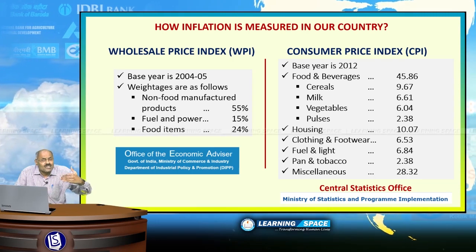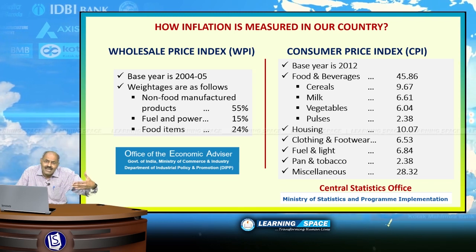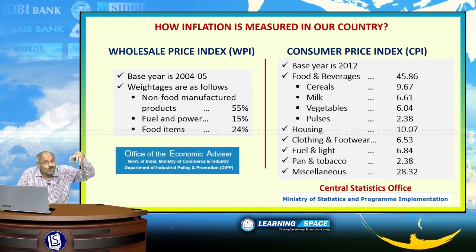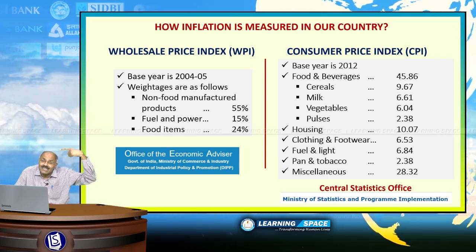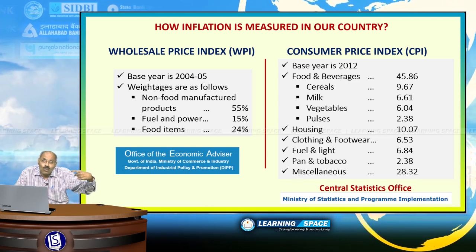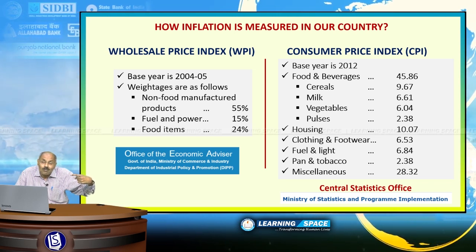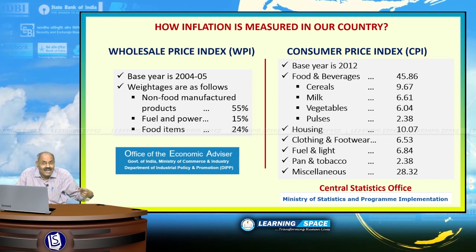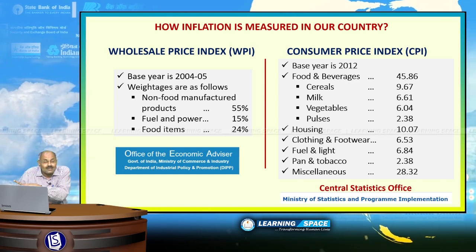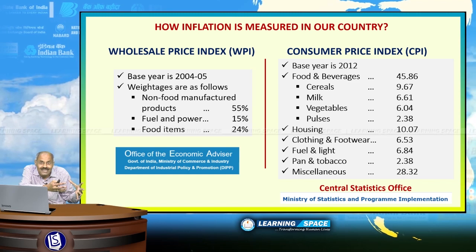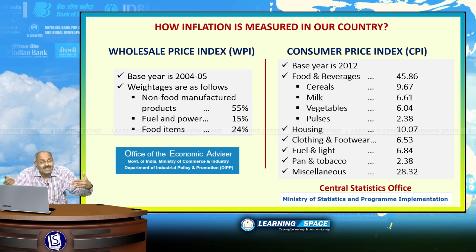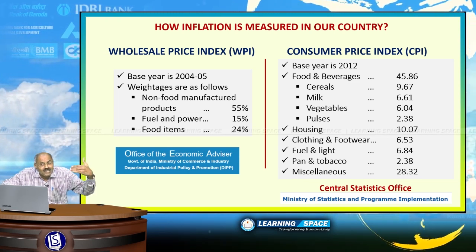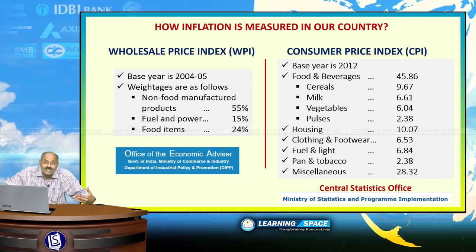Inflation is measured in two ways: wholesale price index (WPI) and consumer price index (CPI). For WPI, the base year is 2004-05, which is 12 years old. Manufactured products have a 55% weightage in WPI, so it does not reflect inflation at the consumer level. That's why RBI does not take WPI into account. WPI was in negative territory throughout 2015. WPI figures are released by the Office of the Economic Advisor, Department of Industrial Policy and Promotion.